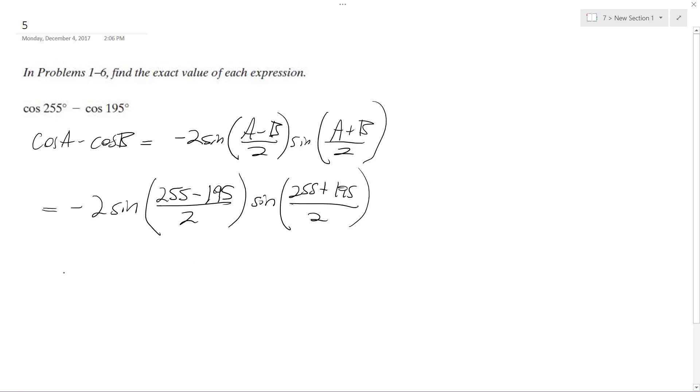And ultimately what these reduce down to is negative 2 sine 60 divided by 2, which gives us 30. And then we get the sine, ends up being 450 divided by 2, sine of 225 degrees.